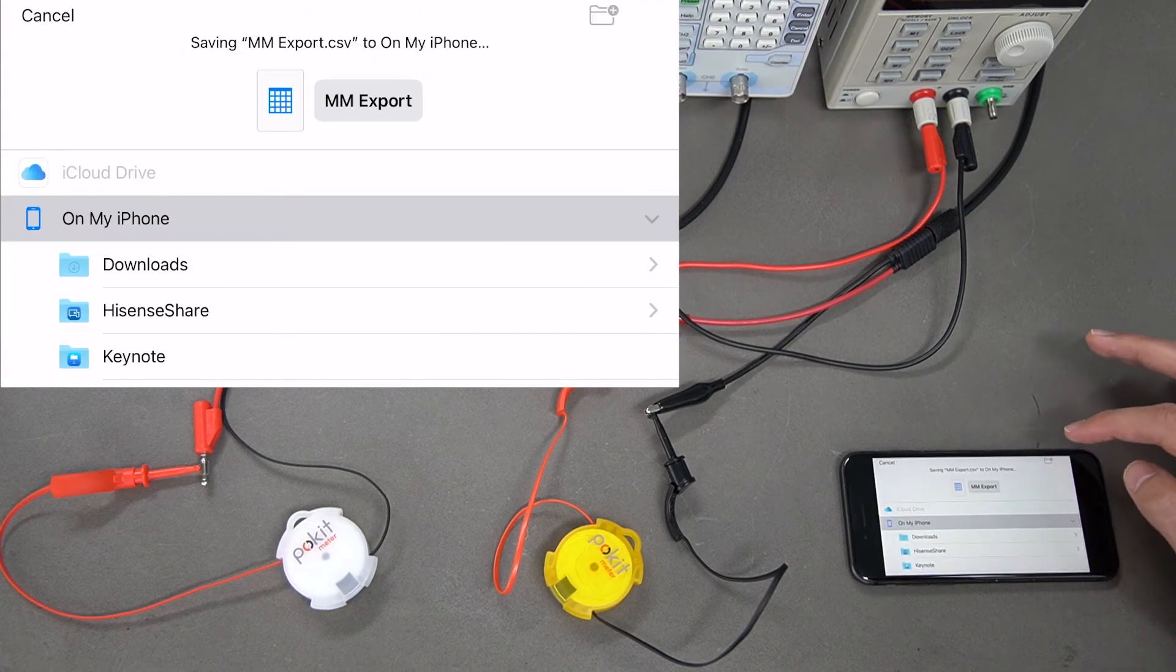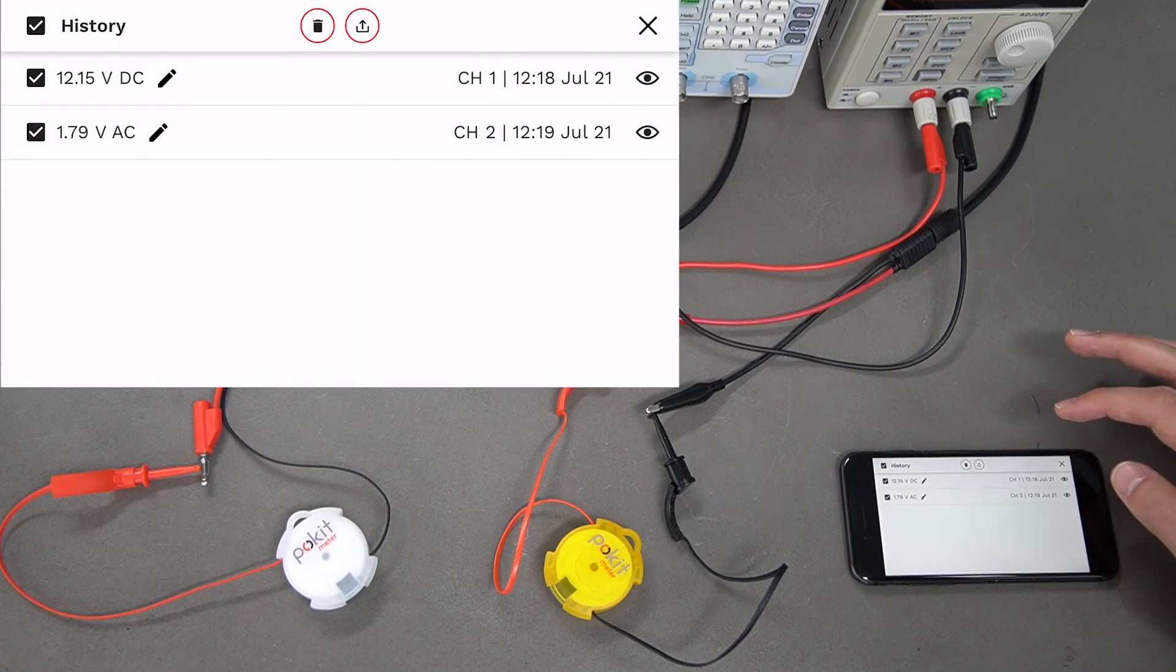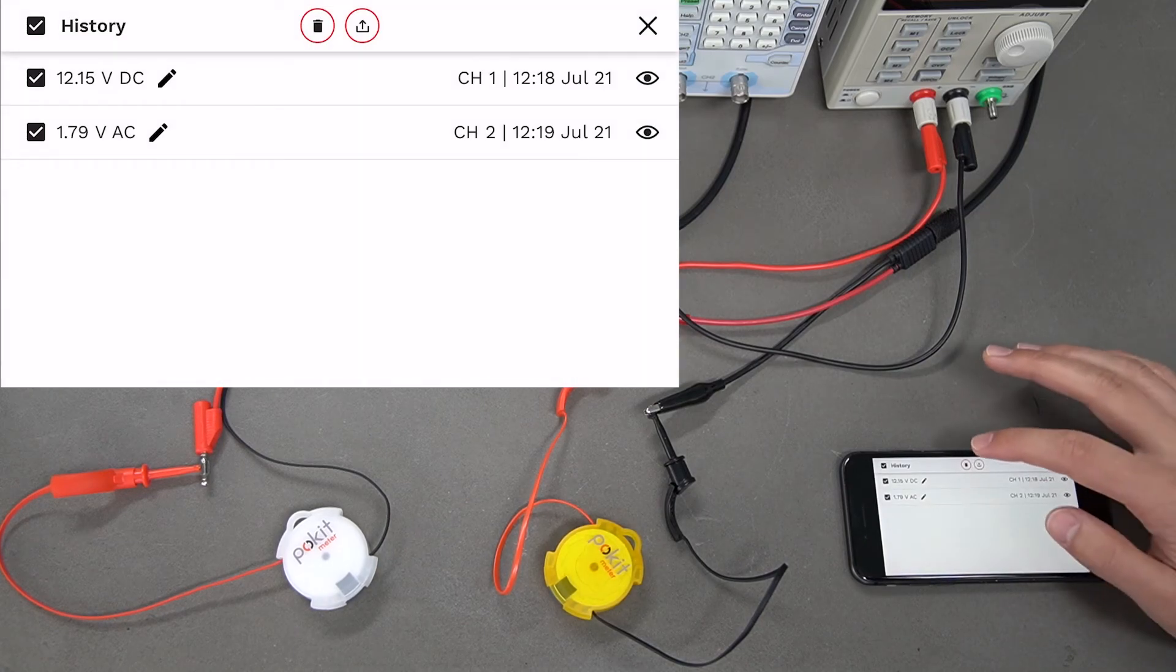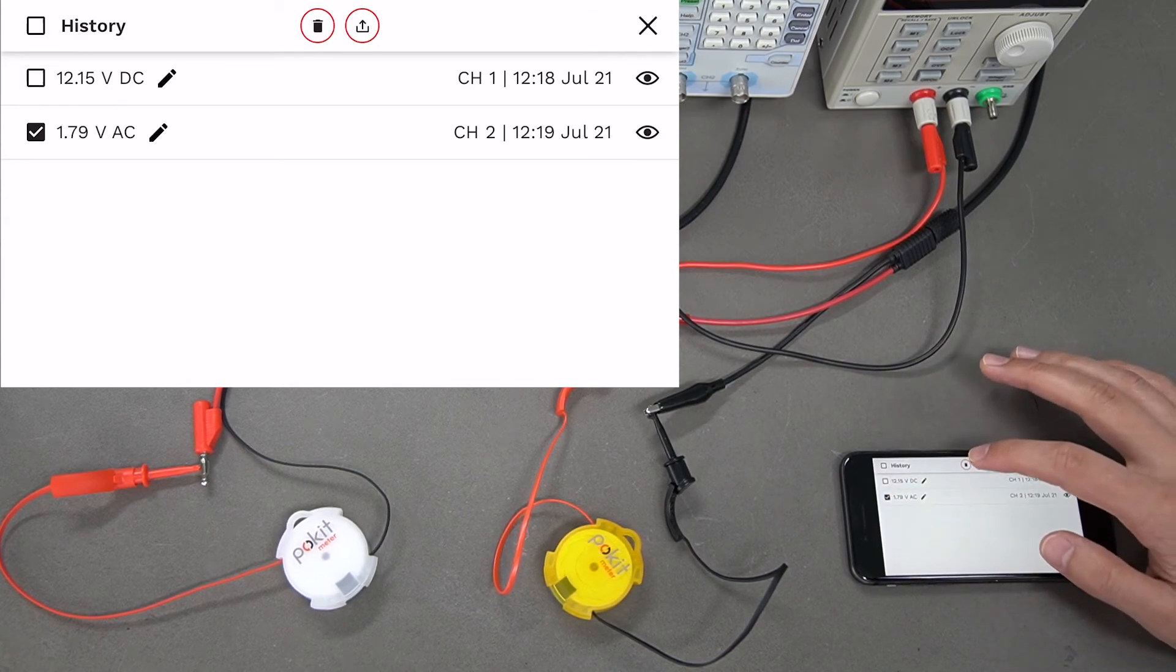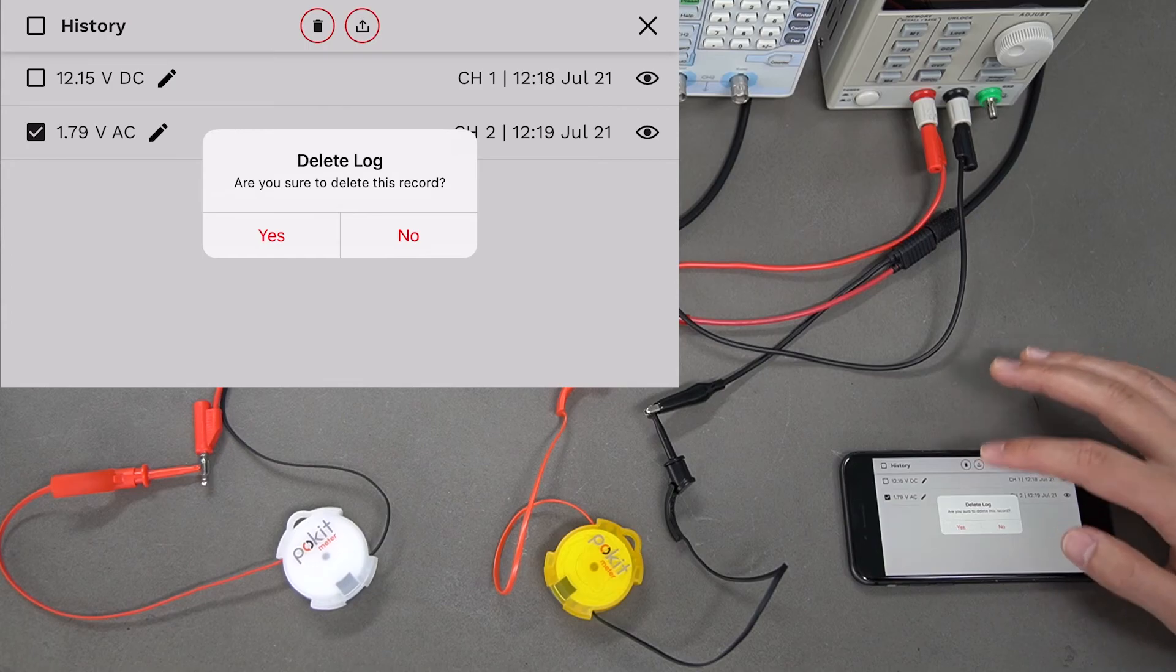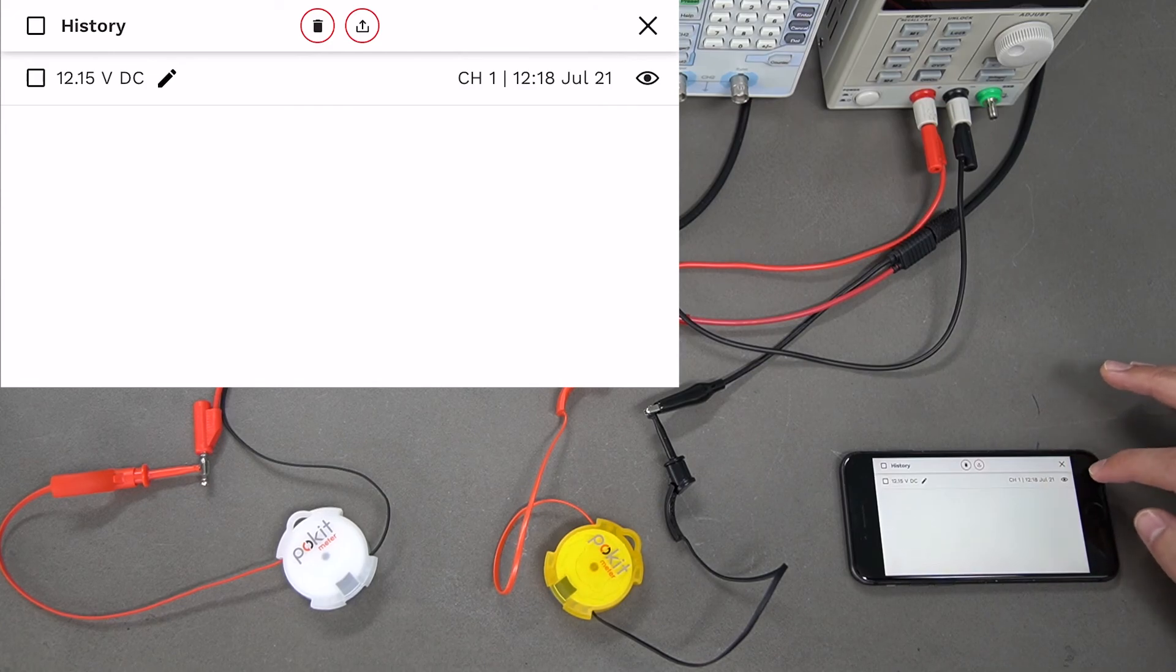You can delete those if you want as well. If I didn't want this bottom one, I'll just press that little bin button at the top, select yes, and that's gone. If you like, you can also view these by pressing the eye button on the right.